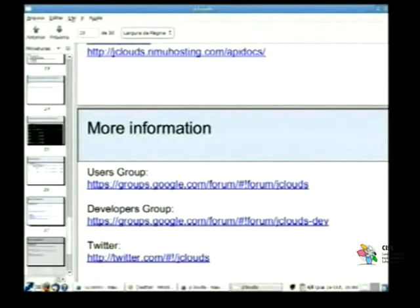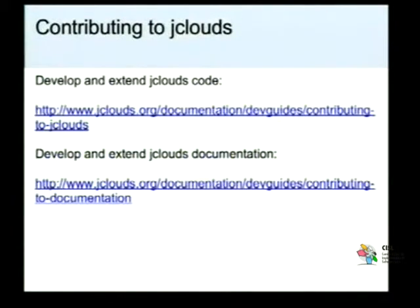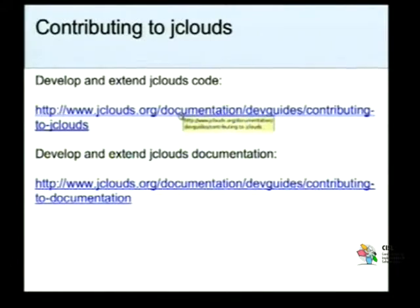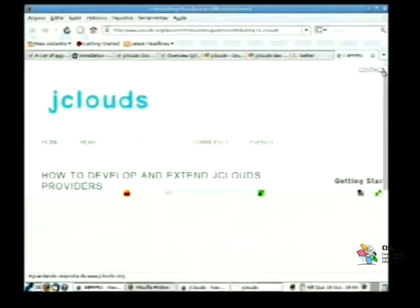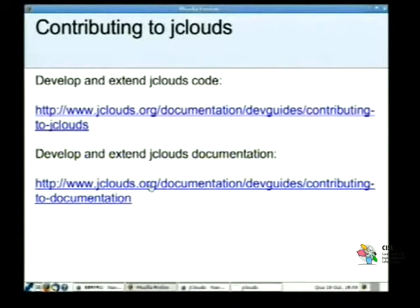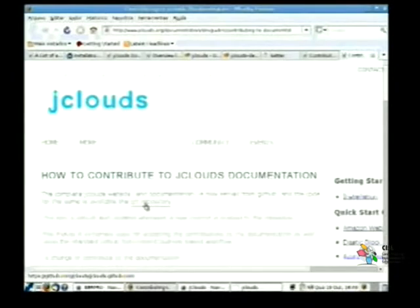E aí tem os guias de como você contribuir. Guia de desenvolvedor de como você contribuir e estender essa biblioteca jClouds. Como você pode contribuir com o código, você vai ter que fazer um fork lá no GitHub, pegar as mudanças lá do master. Tem as informações de como você configurar os arquétipos para cada uma das abstrações da biblioteca jClouds. E tem também como você contribuir para a documentação especificamente do jClouds, melhorar os exemplos disponibilizados na comunidade.